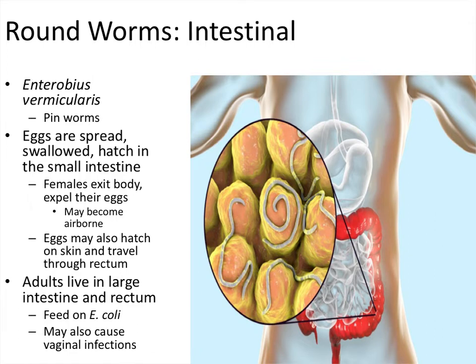The adults primarily live in the large intestine and rectum, and they feed mostly on E. coli. In females, they can cause vaginal infections, but these usually don't last very long because there aren't as many food sources there — the bacteria that inhabit the vagina aren't always the right ones for them to feed off of and survive.